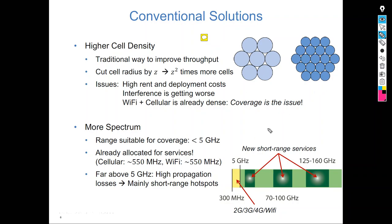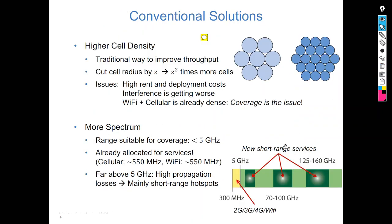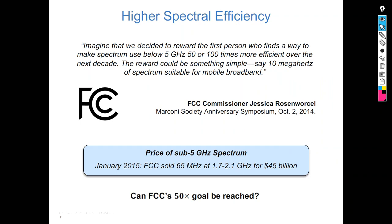So we are left with one solution: increasing the spectral efficiency. Unlike the previous solutions which are straightforward — just get licenses, deploy — here, intelligence is required. Within the same cell and same resources, you want to increase the number of data streams you can transmit. One solution for this problem is Massive MIMO.